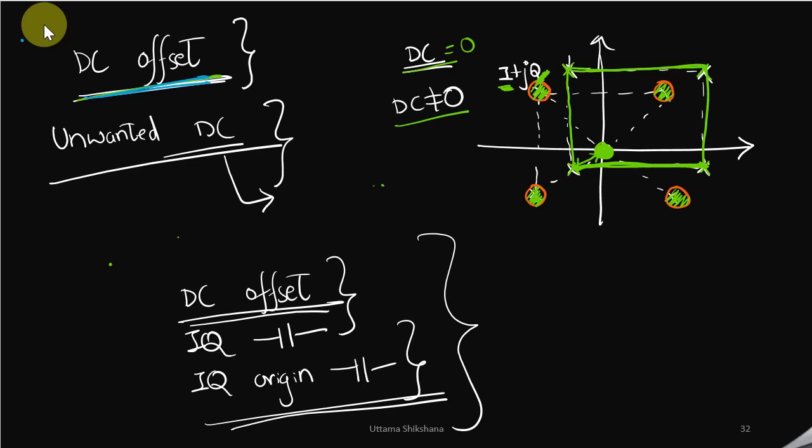Now I will talk about the DC offset. Because of the LO leakage, unwanted DC is introduced at the baseband. If there is no such DC introduced, then we will see the constellation points in an idealistic way and they will be equidistant from the origin. But now, because of the presence of the unwanted DC, those constellation points would have shifted to some other location and are not equidistant from the origin.